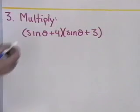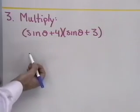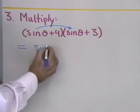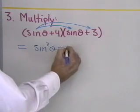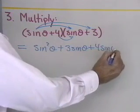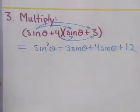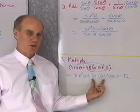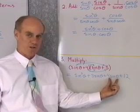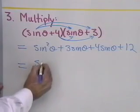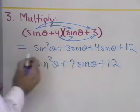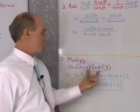For problem 3, I want to multiply (sin θ + 4) times (sin θ + 3). I'll multiply just like I would multiply binomials in algebra. Sine θ times sine θ is sine squared θ. Sine θ times 3 is 3 sine θ, then 4 sine θ, and 4 times 3 is 12. I have two like terms — 3 sine θ and 4 sine θ — which add to 7 sine θ. So the result is sine squared θ plus 7 sine θ plus 12.